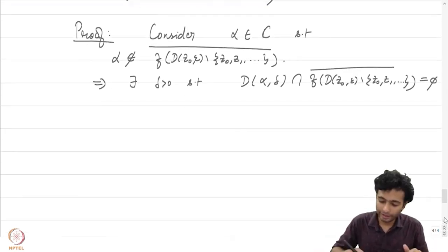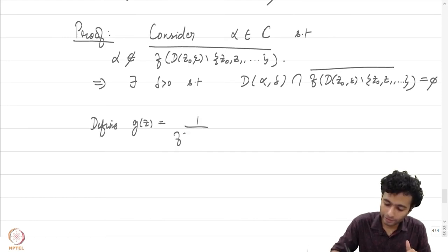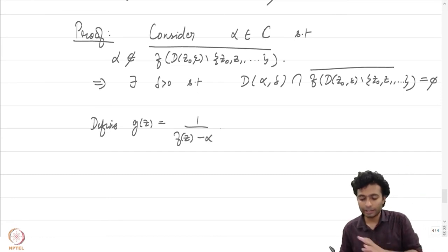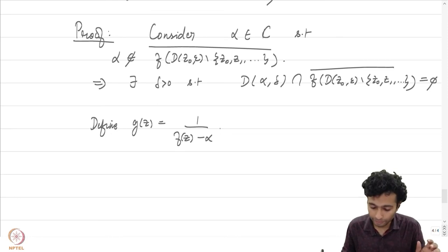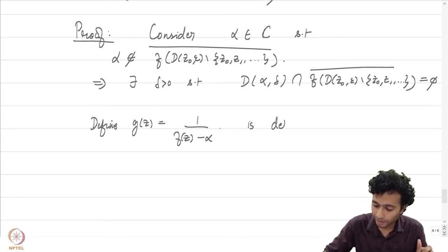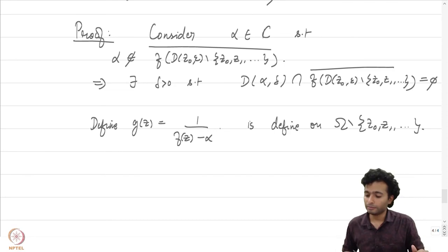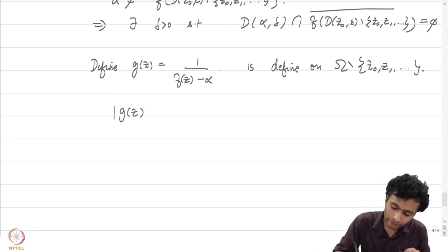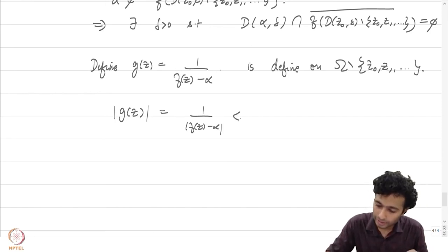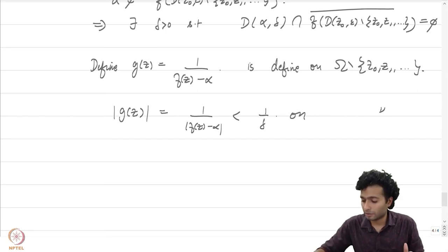Define g(z) = 1/(f(z) − α). Notice that f(z) does not take values in a neighbourhood of α, so 1/(f(z) − α) makes sense and is defined on Ω minus {z₀, z₁, ...}. Also, |g(z)| = 1/|f(z) − α| < 1/δ, so g is bounded. The sequence {z_n} for n ≥ 1 is a sequence of distinct points, so each is an isolated singularity of f.